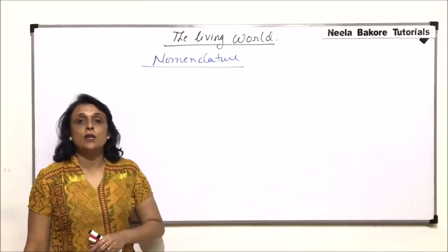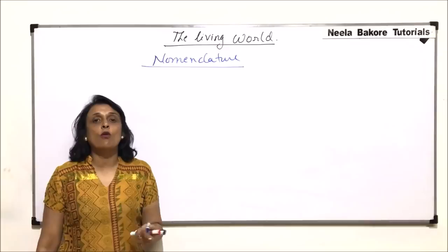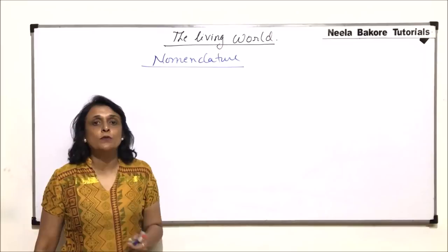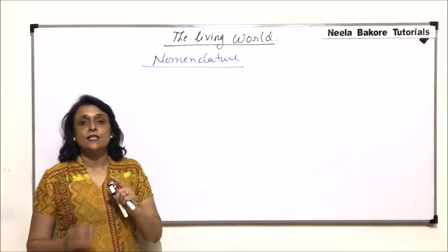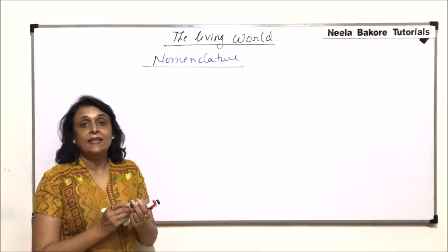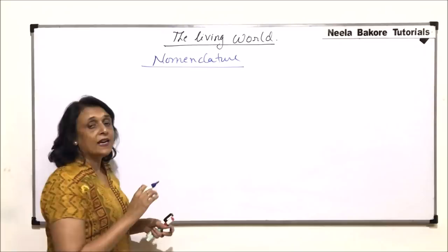This nomenclature has to be universally accepted because most of these organisms have local names, and if we use those local names, people in other parts of the world may not understand that particular organism. So it has to have a specific name which is accepted all over the world, and that name is given on the basis of certain rules.